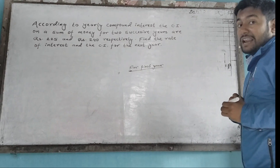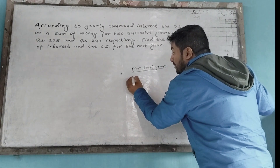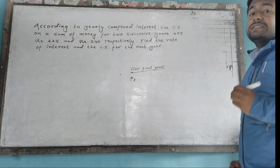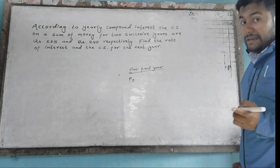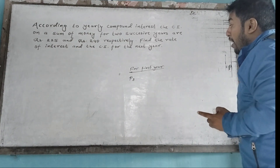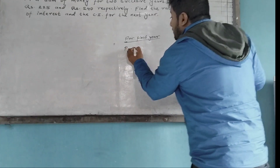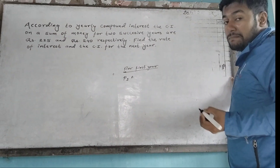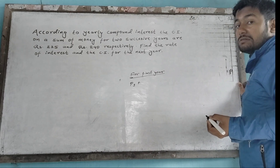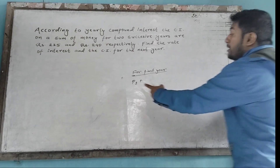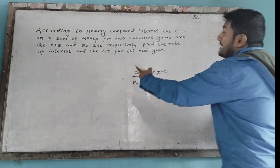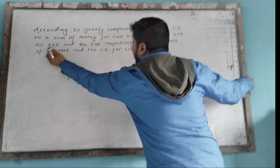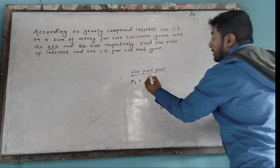For the first year, let the principal be P. The principal for the first year is P, and the compound interest for the first year is Rs. 225.